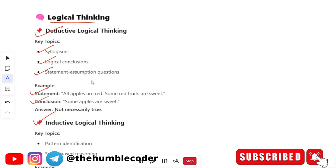For example the statement is all apples are red, some red fruits are sweet and then you have the conclusion some apples are sweet. The answer for this is going to be not necessarily true.